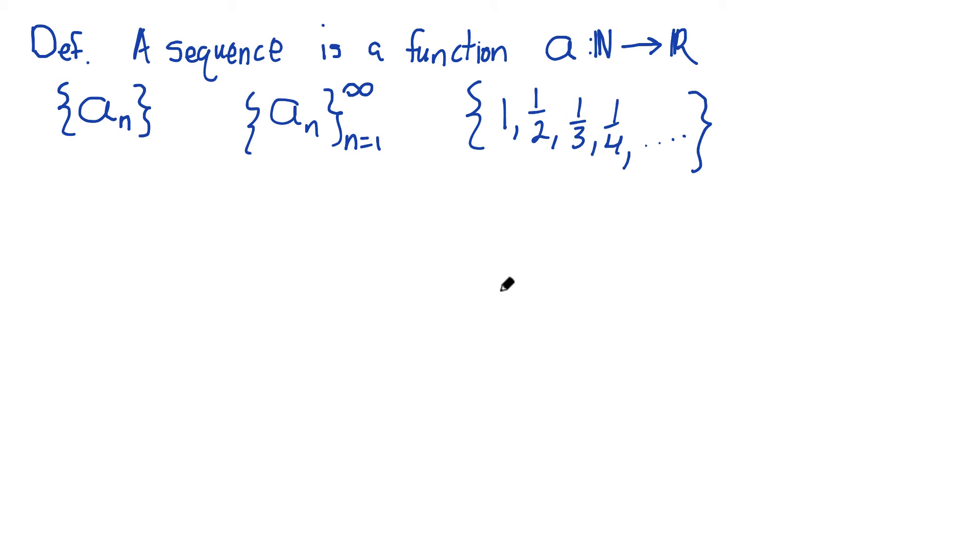Typically, the question is what happens at the end of the list. Does this sequence settle down to a certain spot, or does it not? These are the questions we typically think about. Those are going to be called convergence. We'll talk about that in the next video.